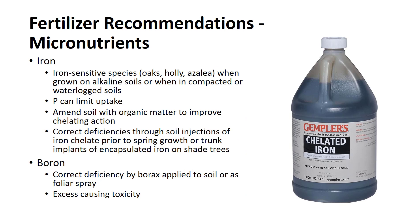Iron deficiency is commonly associated with iron-sensitive plants when they are grown on alkaline soils. It can also occur when plants are growing in compacted or waterlogged soils. Aeration or drainage of the soils will improve air porosity and iron availability. In addition, large amounts of phosphorus or heavy metals can limit the uptake of iron. Amending the soils with organic matter will improve the chelating action on the iron, preventing it from becoming fixed or precipitated out of the soil solution. The best corrective measure for woody plants has been soil injections of iron chelate just prior to spring growth, although trunk implants of encapsulated iron are also effective on shade trees.